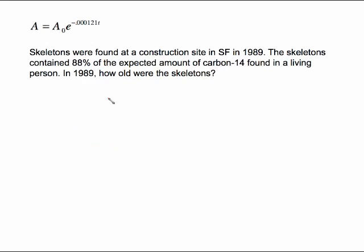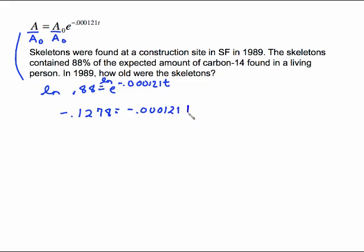Similar problem. Skeletons were found at a construction site in San Francisco in 1989. The skeletons contained 88% of the expected value. So the same idea, if I divide both sides by A sub 0, this A over A sub 0 is 0.88. And that equals E to the negative 0.000121 T. Take the natural log of both sides. So it is negative 0.1278 equals negative 0.000121 T. To solve this, just divide both sides by this negative 0.000121. T is 1056.40 something, 47 I think it is, which rounds because Math Excel says to round to one decimal place to 1056.5 years.